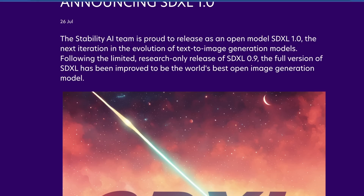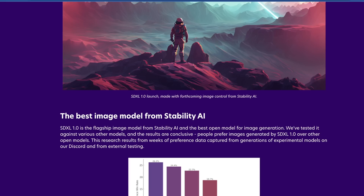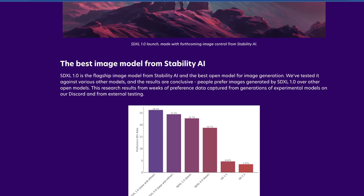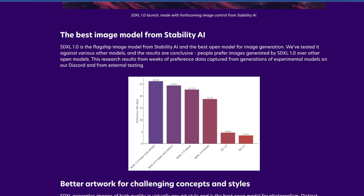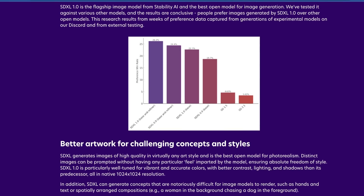Stability is pretty much saying they're excited to release SDXL 1.0 as the next iteration and evolution of text-to-image generation models. They call it the best image model from Stability AI and say they've tested it against various other models with conclusive results — people prefer images generated by SDXL. This is similar to how MidJourney presents images and people pick the best one. There's no way to fully validate it, but they claim from external testing that people generally prefer SDXL over other forms of Stable Diffusion.